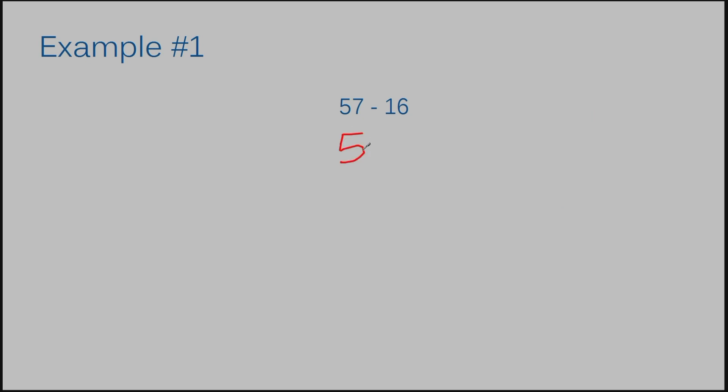Example number one, we have 57 minus 16. I need to rewrite these problems so they're lined up considering the place value. I'm going to write 57 and write 16 directly underneath. This problem is pretty easy to line up correctly because both numbers only have two digits. Whenever both of your numbers have the same amount of digits, you're just going to stack the numbers directly on top of each other.